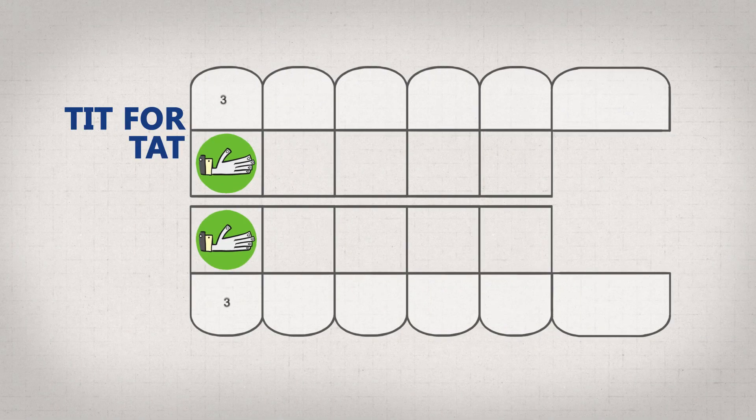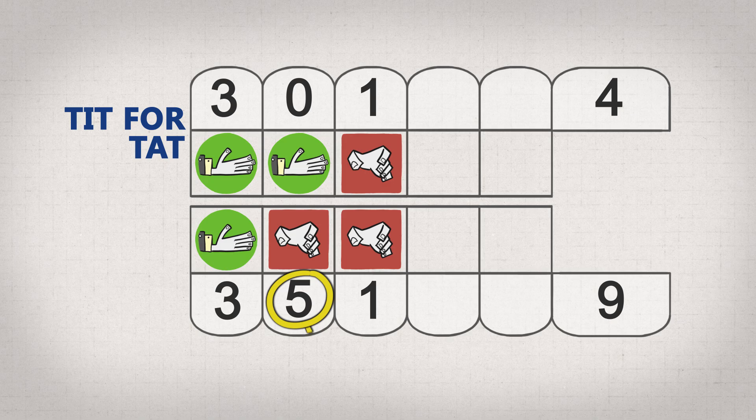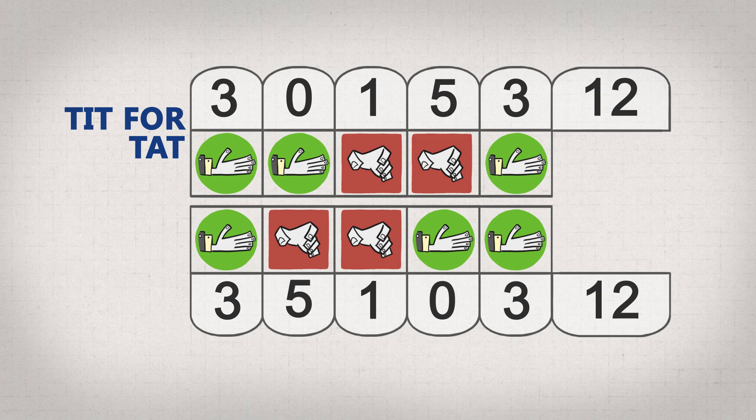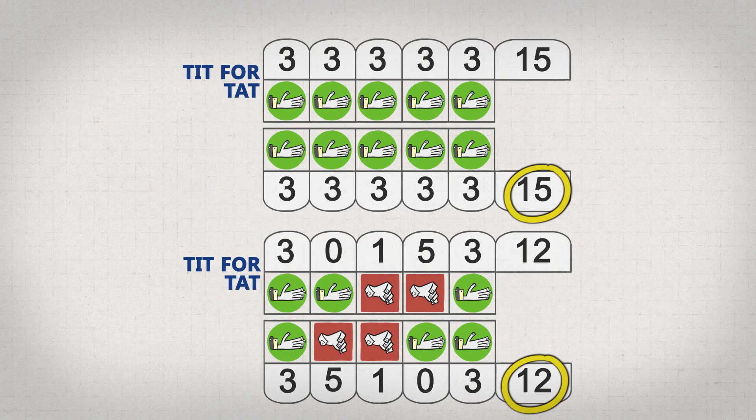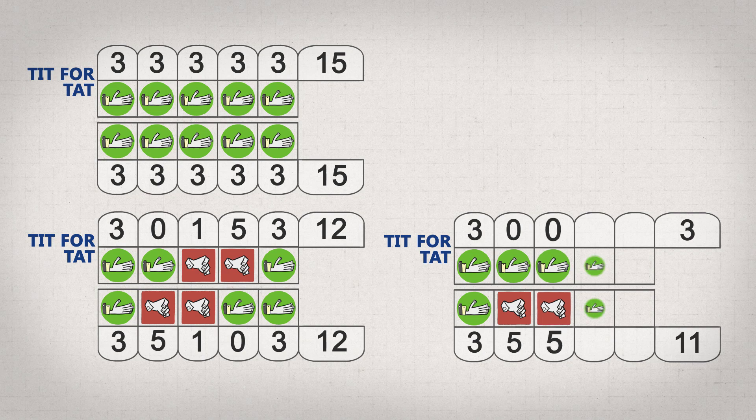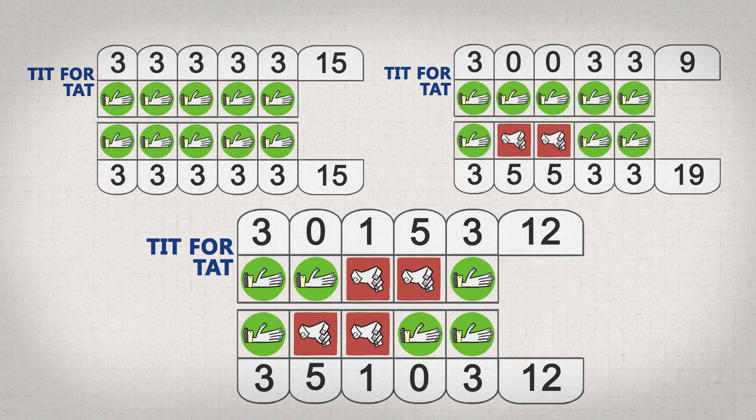Why did it win? It's a simple strategy, but one thing it does is, it reciprocates quickly against defectors. Any strategy against tit for tat that tries to take advantage of it, gets instantly punished and put into a bad situation. So if the other strategy keeps defecting, or even if it tries to go back to cooperating, it would have gained less than it would have if it had just kept cooperating with tit for tat. And if tit for tat didn't punish, tit for tat would have been worse off. So, we might say that tit for tat is retaliating. It punishes defection, which is good because it can prevent some losses, and it can disincentivize an opponent from defecting.